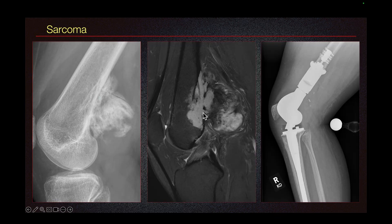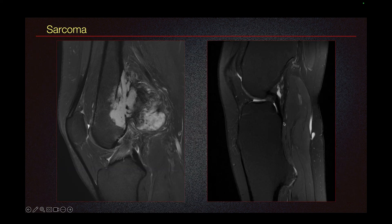This is the same sarcoma on MRI. We can see a large mass that extends into the bone and outside the bone, and the patient was treated with surgical resection of the distal femur and placement of a prosthesis. Here again, we can look at the sarcoma and compare this to our osteochondroma.